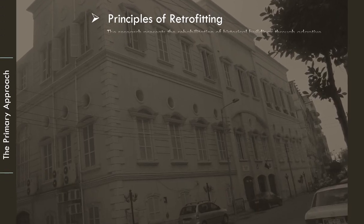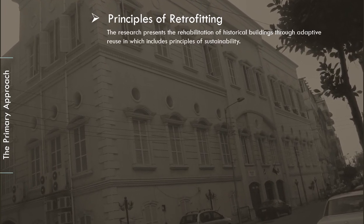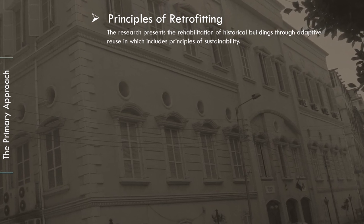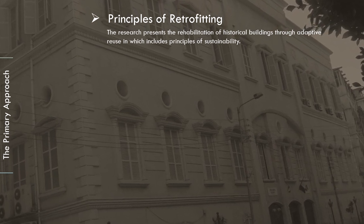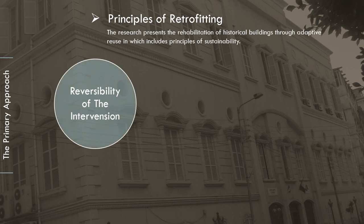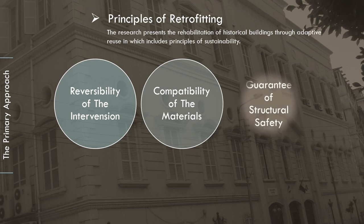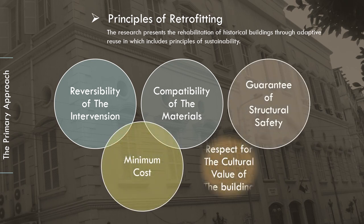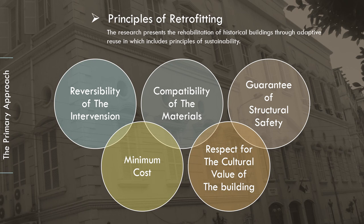The research presents the rehabilitation of historical buildings through adaptive reuse, which includes principles of sustainability. These principles are: reversibility of the intervention, compatibility of the materials, guarantee of structural safety, minimum cost, and respect for the cultural value of the building.